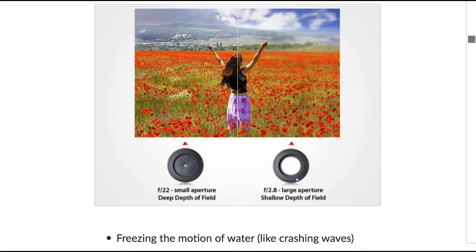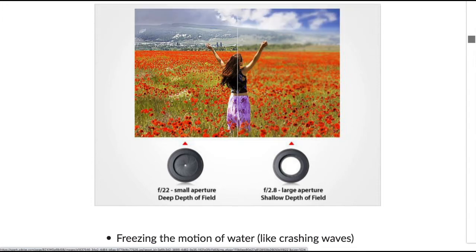Here's an example of what using different apertures means for depth of field. If you use a large aperture like f/2.8, you have a shallow depth of field — only the area around certain flowers will be in focus. If you use a small aperture — and when I say small I'm referring to the size of the lens opening, f/22 is a small aperture — you have a deep depth of field where everything from the foreground flowers all the way to the background is in focus.